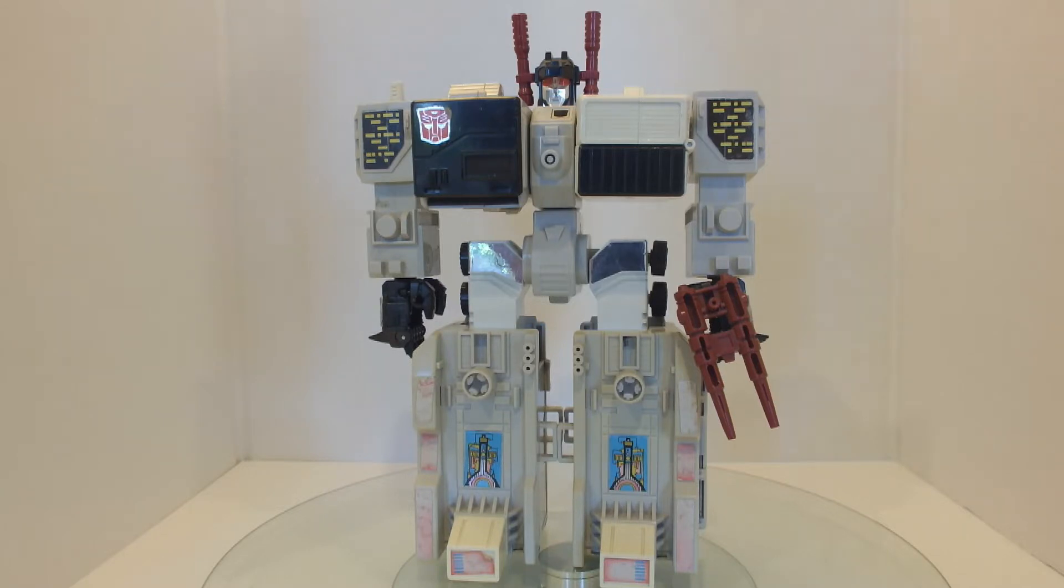They are in fact the spiked fists from Power of the Primes Dinobots. So I've got Snarl and Sludge, I think. But I'm pretty sure that those are the two I've got.